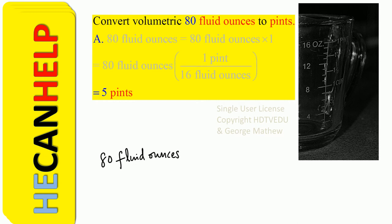So we start with 80 fluid ounces, multiply by 1, and we replace 1 in such a way that the ounces cancel out.